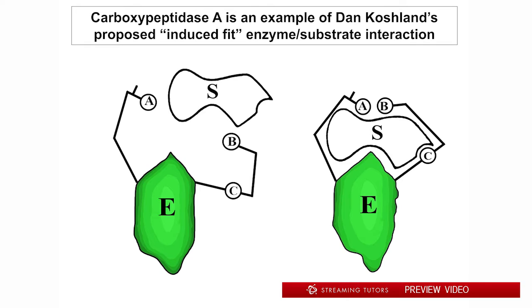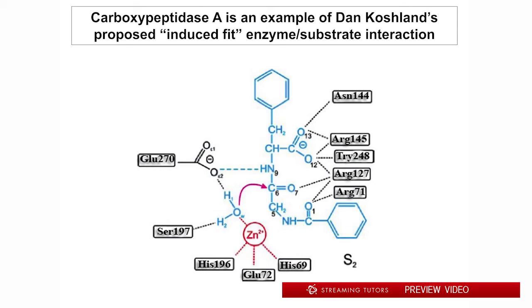Notice the two arms sticking out here with the A, B, and C groups on them. Notice the substrate S — as it binds to the enzyme, these arms embrace it, surround it, and juxtapose the A, B, and C groups intimately with the substrate. In fact, carboxypeptidase A appears to be an example of an enzyme that uses induced fit to precisely position these reactive amino acid side chains — and, as you'll see, not only amino acid side chains but some other things that will emerge in just a moment.